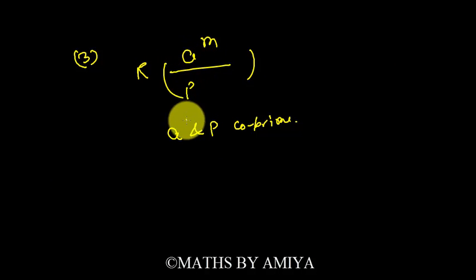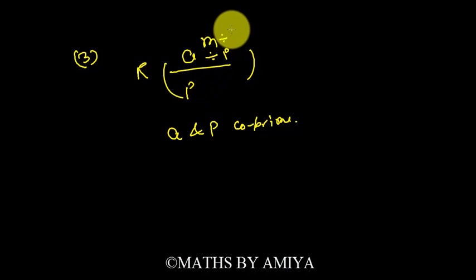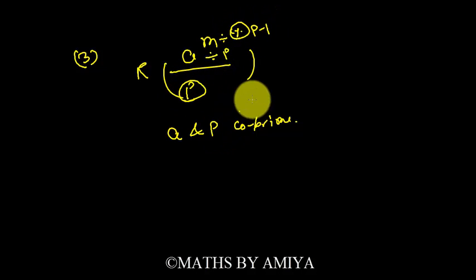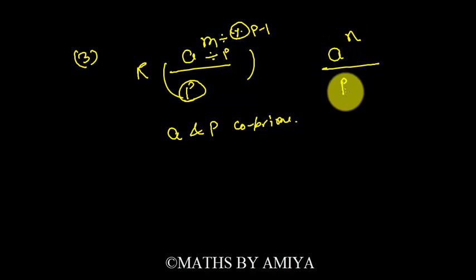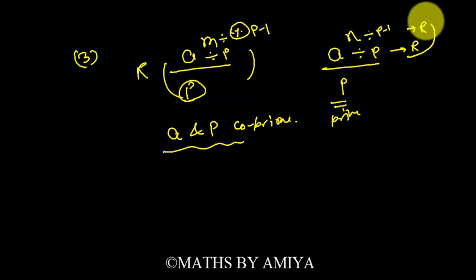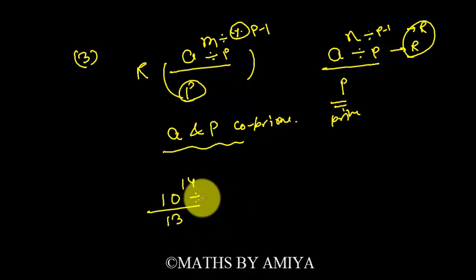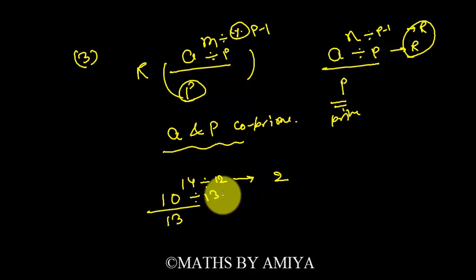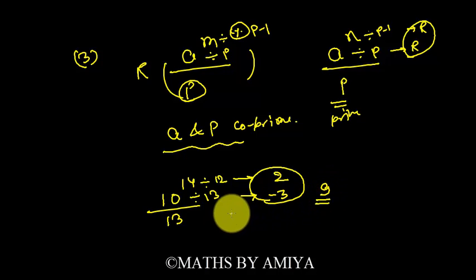Concept number three: when a^m is divided by p, where a and p are co-prime, we divide a by p to get the base remainder, and divide m by p minus one (if p is prime) to get the power remainder, then work on that value. Example: 10^14 divided by 13. Remainder of 10 ÷ 13 is minus 3 (i.e., 10 - 13). Remainder of 14 ÷ 12 is 2. So we compute (-3)^2 = 9. The remainder is 9.